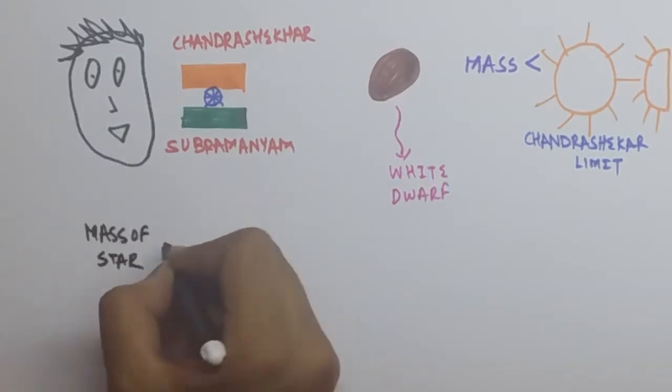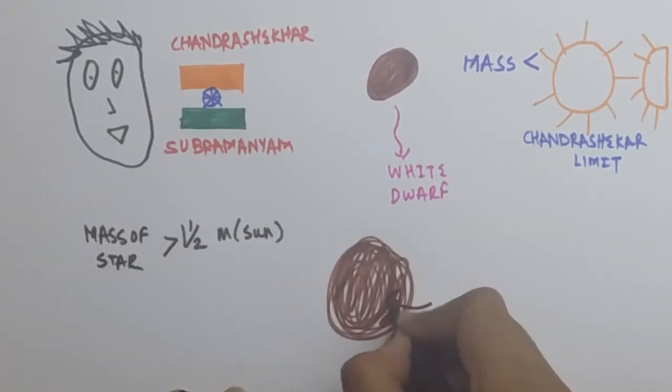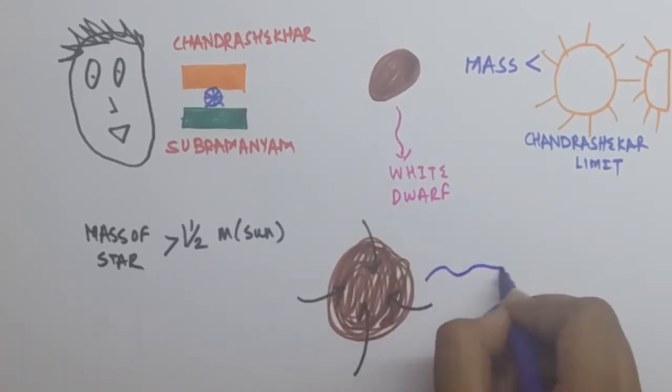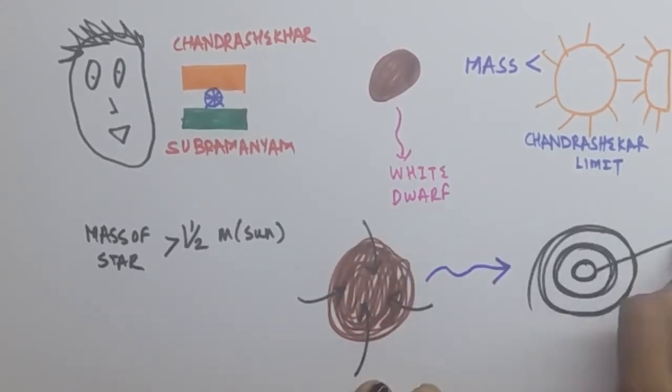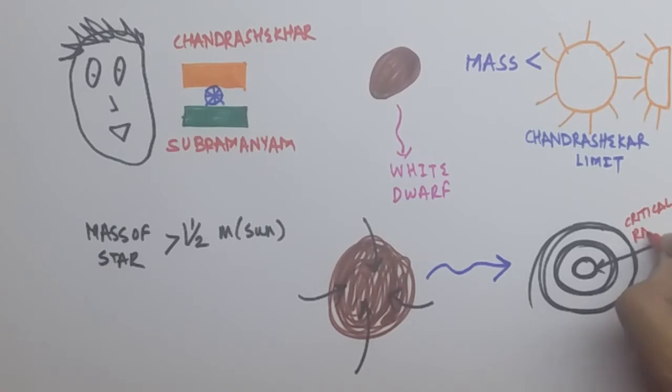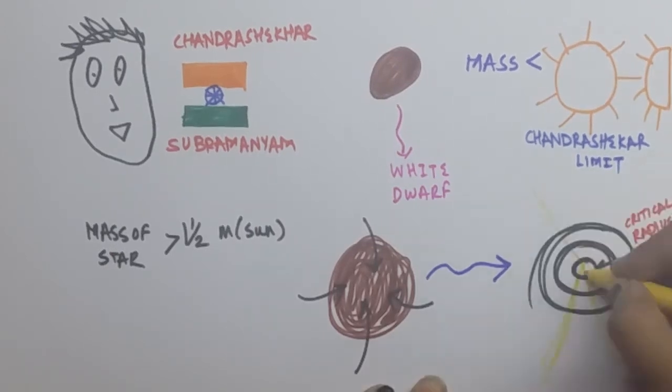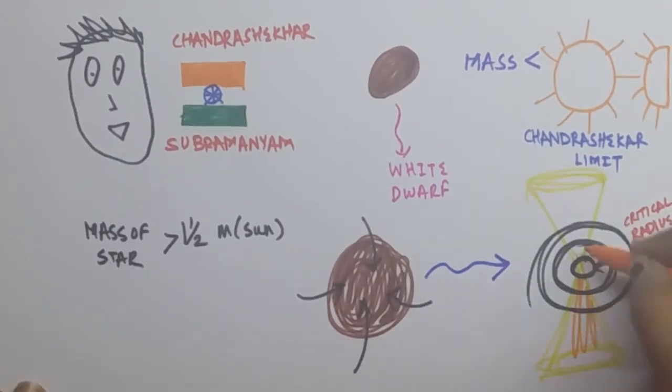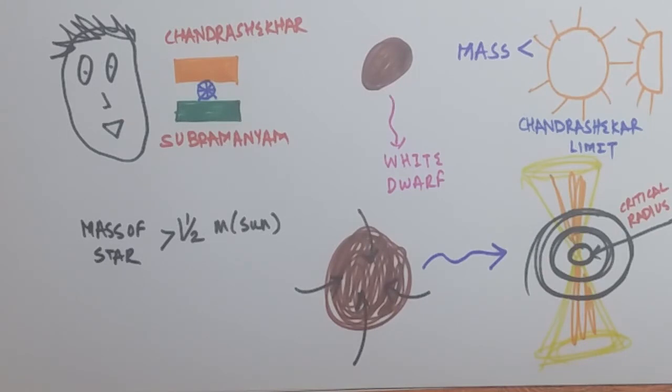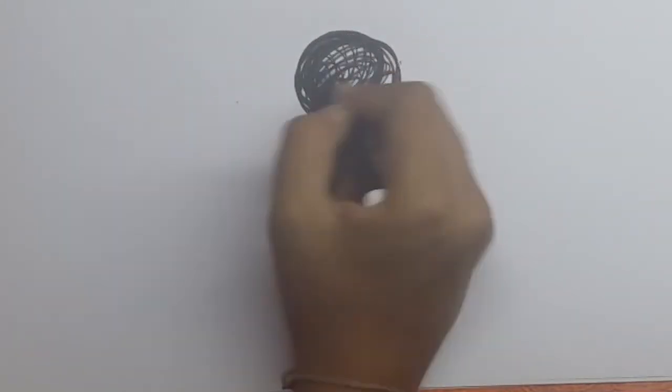If the mass of the star is greater than the Chandrasekhar limit, the star won't be able to support itself. Eventually, the star will shrink to a certain critical radius such that light cones, which are the path followed by spacetime, will not be able to escape the gravity of the star.